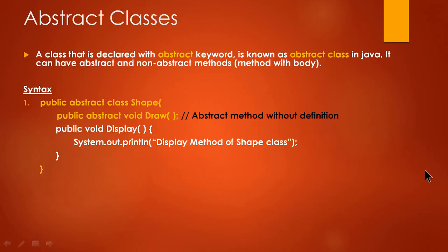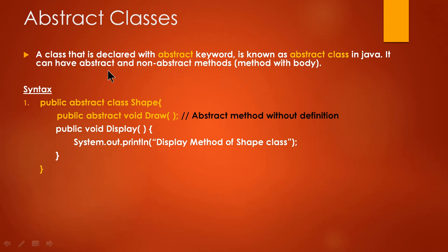Starting with the abstract class — a class which is declared using the abstract keyword. This abstract keyword is actually a keyword in Java. You create a class by declaring it using the abstract keyword. For example: public abstract class Shape. That means the abstract keyword comes before class, and then the name Shape. Shape is an abstract class.